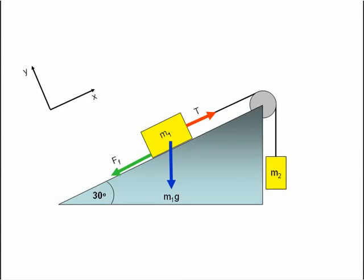With this problem, we have to draw free body diagrams for the two objects in the system, in other words, M1 and M2.